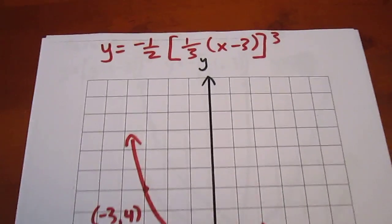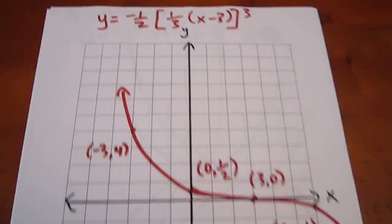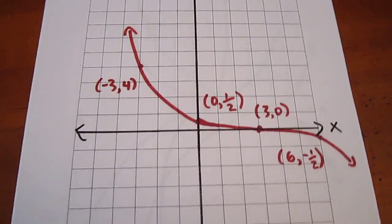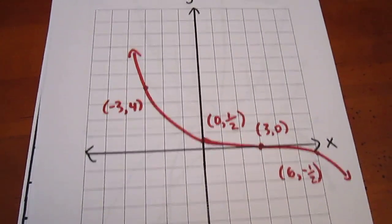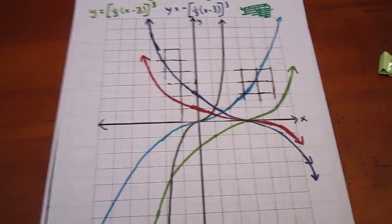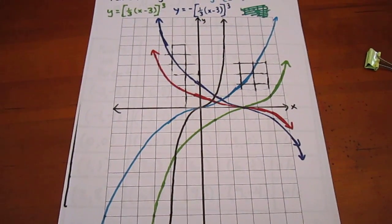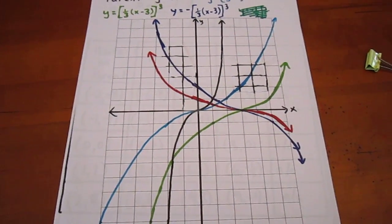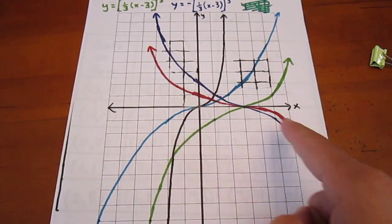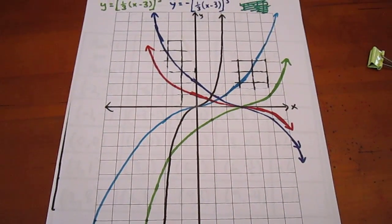If we were to put all of those transformations on one graph it would look quite complex, but if you focus on that red curve, that's the function we were asked to graph.